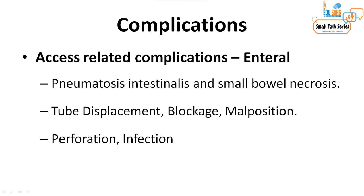For enteral nutrition access, making a hole in the gut that is not properly sealed, or a kink at the fixation site of the tube to the abdominal wall, can lead to small bowel necrosis and pneumatosis intestinalis. With feeding jejunostomy or gastrostomy, pneumatosis intestinalis can be benign or indicate small bowel necrosis — these must be distinguished before taking the patient to surgery. Other complications include tube displacement, tube blockage, tube malposition from surgical problems or peristalsis, intestinal perforation, and skin site infection.